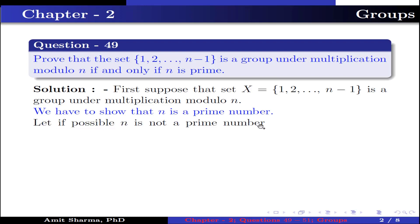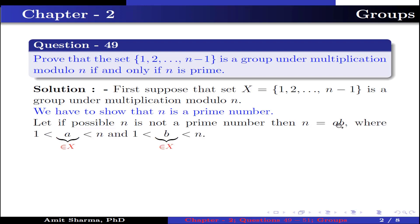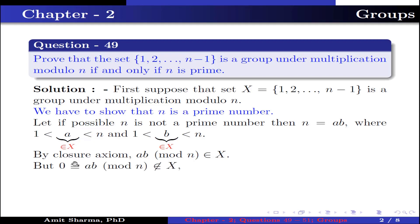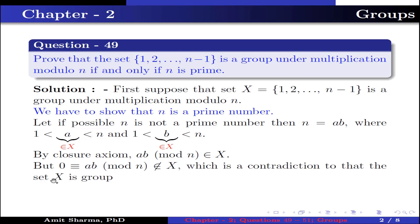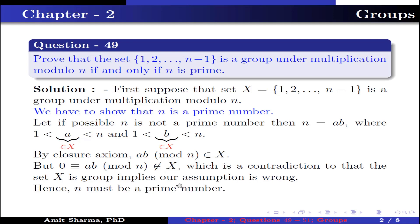Let if possible n is not a prime number, then n can be written as a product a times b, where 1 < a < n, so a belongs to X, and 1 < b < n, so b belongs to X. Now by the closure axiom, ab mod n belongs to X, but ab mod n equals 0, which does not belong to X — a contradiction. Hence our assumption is wrong and n must be a prime number.